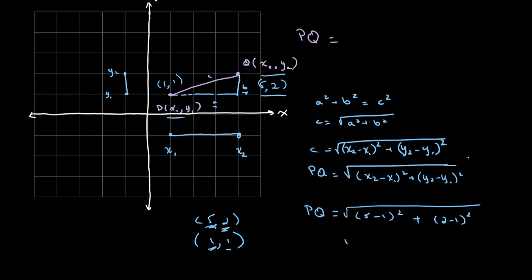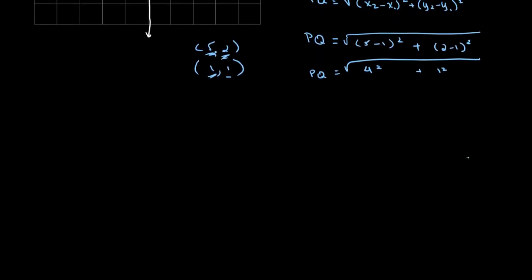And this gives us the value of the square root of 4 squared plus 1 squared is equal to PQ. PQ is equal to the square root of 16 plus 1 which is equal to the square root of 17. So PQ would be equal to the square root of 17.